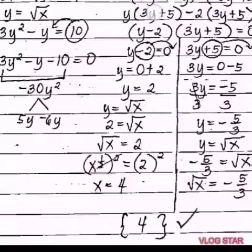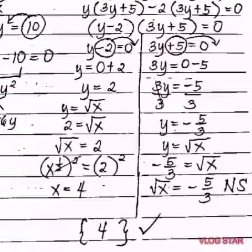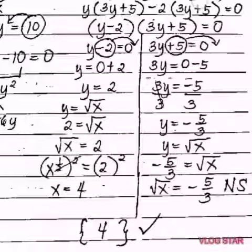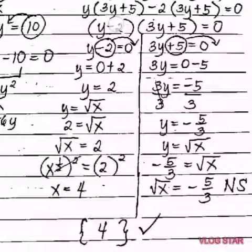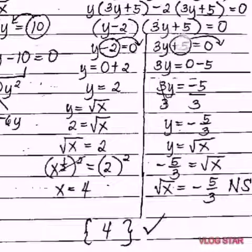Copy the first term 3y squared, then the first factor 5y, then negative 6y, then the last term negative 10 equals 0. Get the common monomial factor: y is common in 3y squared and 5y, leaving 3y plus 5 inside. The common monomial factor of negative 6y and negative 10 is negative 2, since negative 2 times 3y is negative 6y and negative 2 times 5 is negative 10. So we write y times the quantity 3y plus 5, and negative 2 times the quantity 3y plus 5 equals 0. Since 3y plus 5 appears twice, we take it as one factor: the factored form is 3y plus 5 times y minus 2.